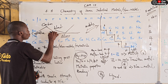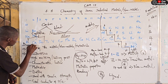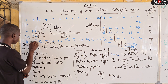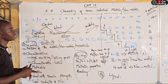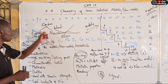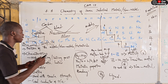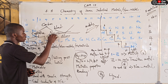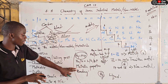Carbon exists in allotropic forms. Under the crystalline form we have diamond and graphite. Diamond is the hardest substance known to man, but graphite has the ability to conduct electricity. Graphite is the only non-metallic electrode that behaves like a metal, because graphite has mobile electrons, which gives it the ability to conduct electricity.